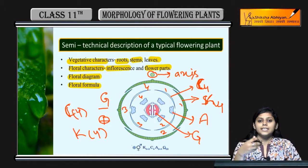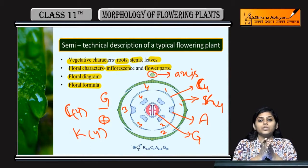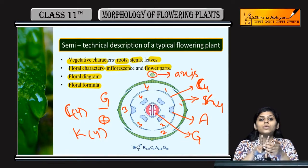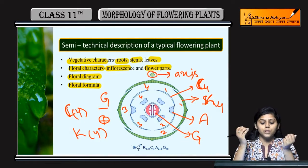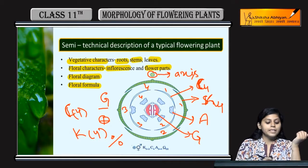Zygomorphic kya hota hai? Agar aap kisi plant ya flower ko cut karo, toh woh sirf ek axis mein cut karne par 2 equal halves mein cut hoga - sirf ek hi axis se woh cut hokar 2 equal halves mein aayega. Toh uske liye yeh sign use hota hai.